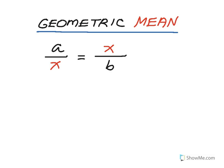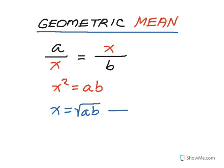Cross multiplying to solve for X: X times X gives X squared equals A times B. Taking the square root of both sides, X equals the square root of A times B. This is the shortcut formula we'll always use. We don't always have to set up the proportion, although it's important to understand that it comes from a proportion. The geometric mean between two numbers is the square root of the product of the two numbers.